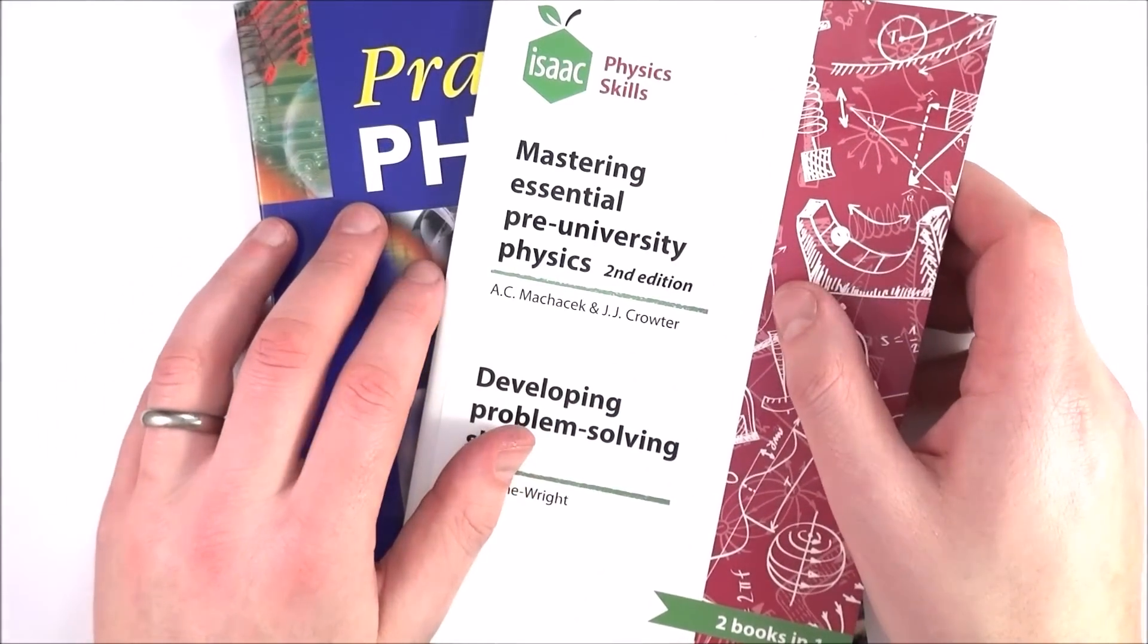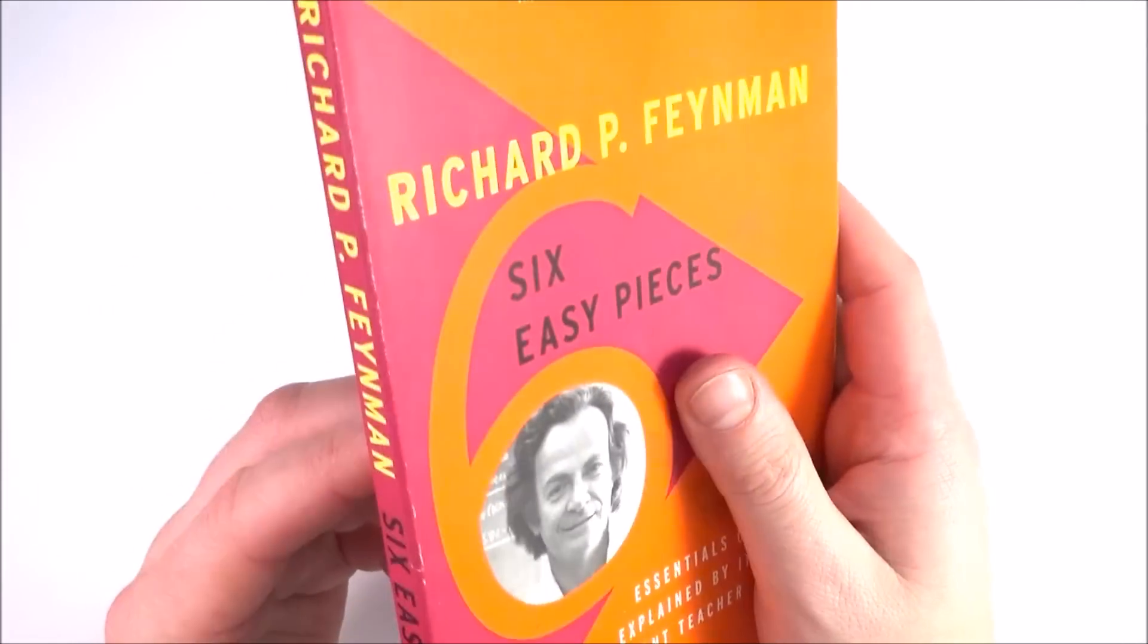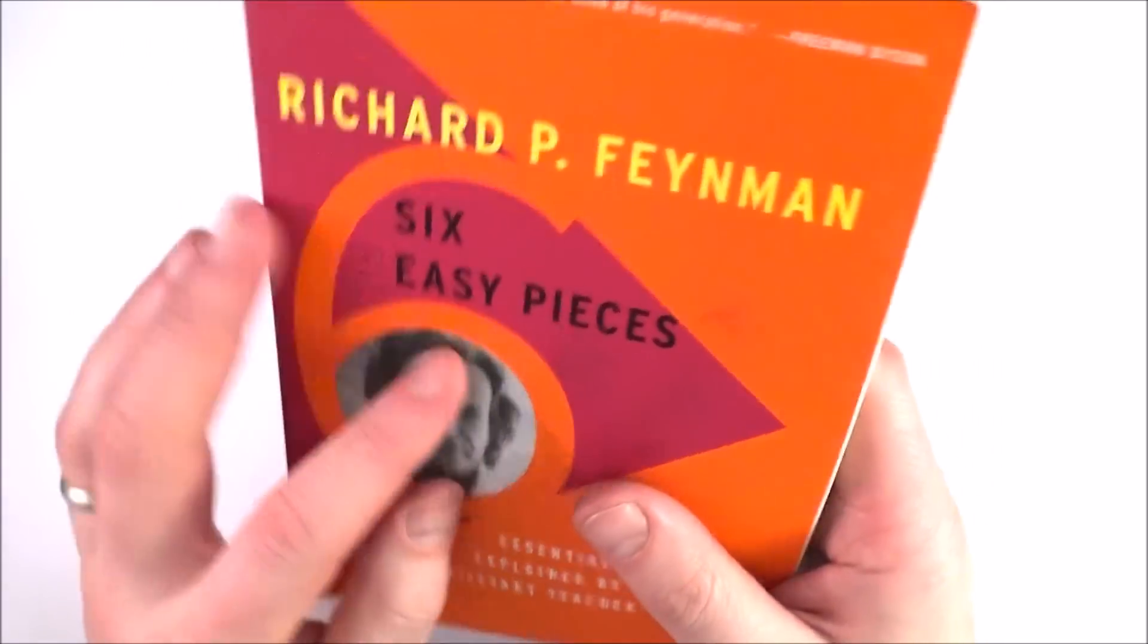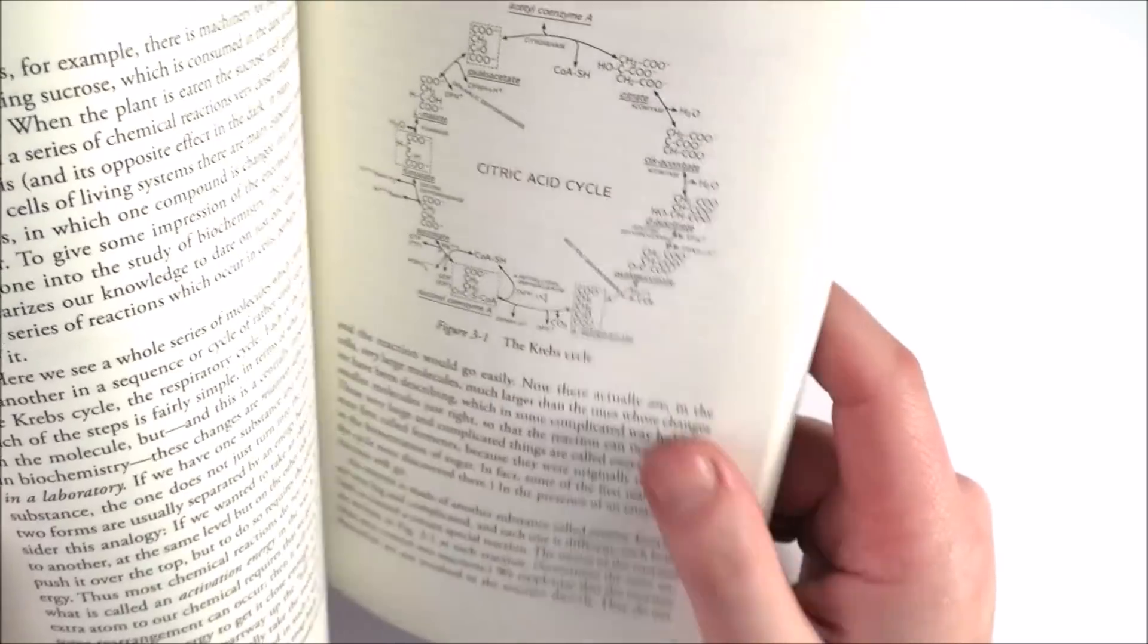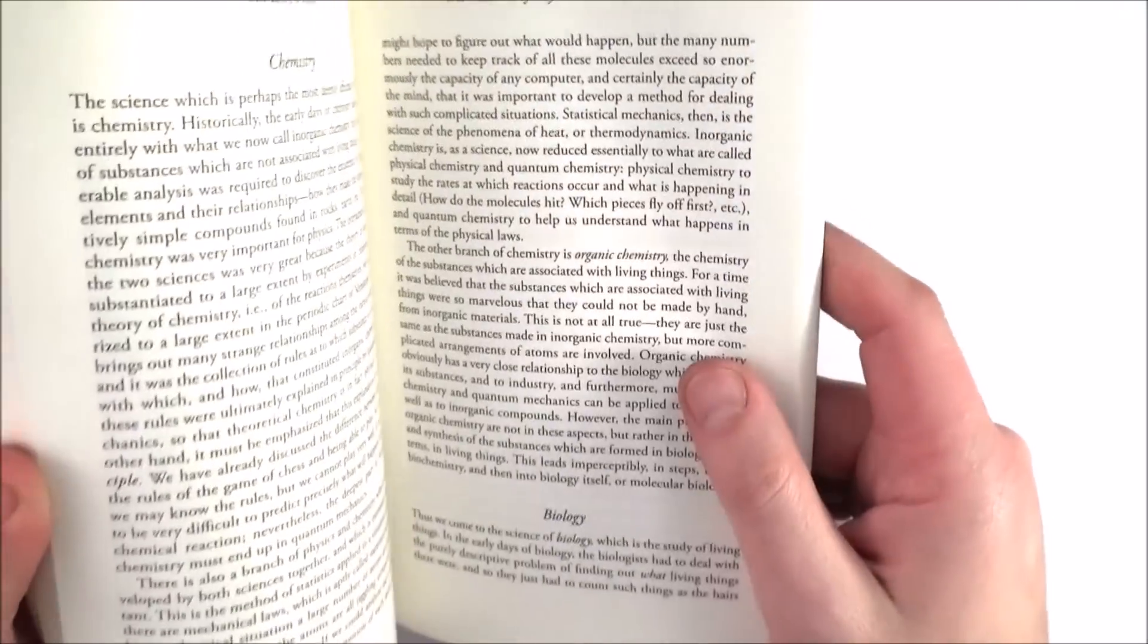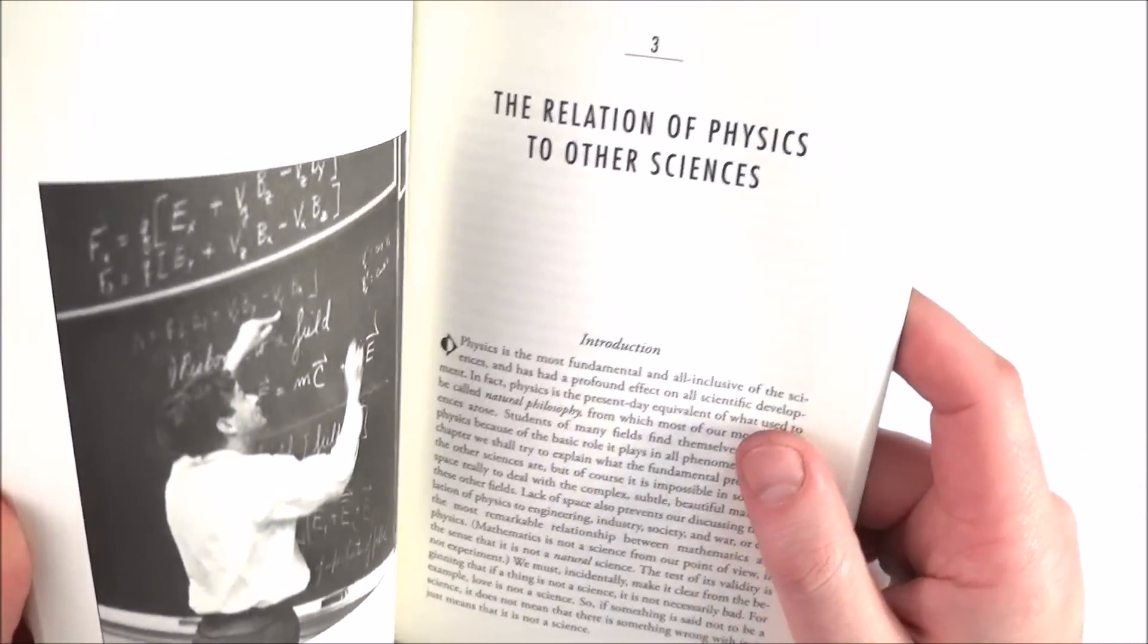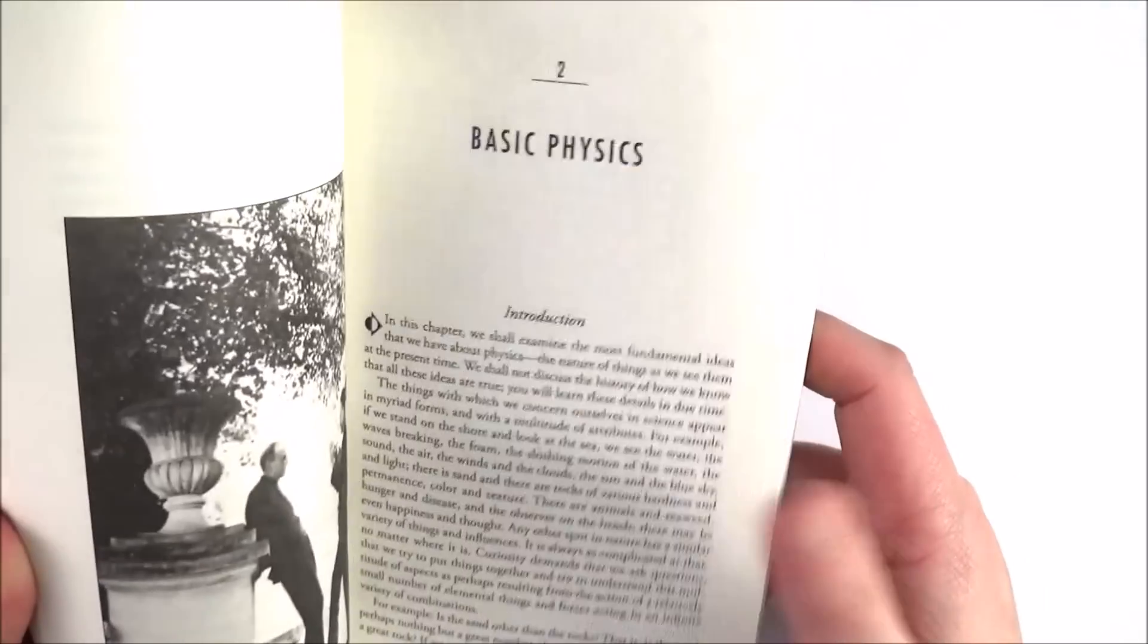But if all you do is read textbooks then you'll be a very dull person. This book here is an example of the kind of thing that you should be reading: Six Easy Pieces by Richard Feynman. He just talks about basic science for the average reader, which is somebody like yourself. You can read this when you're doing GCSEs and therefore by the time you get to A-level it's absolutely fine.